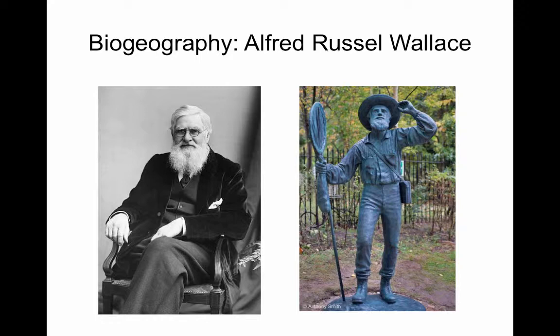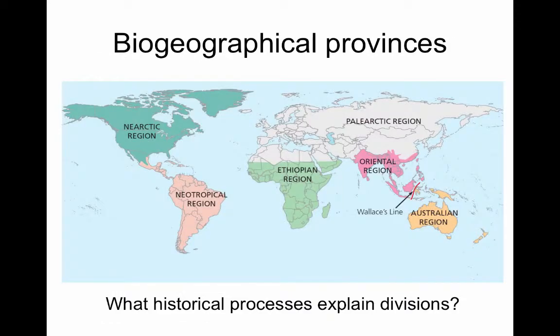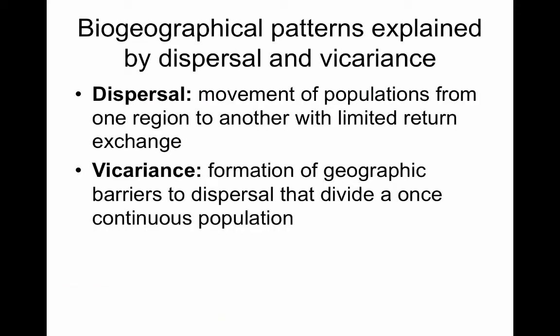He turned around and went to Indonesia and started the same collection there all over again. In his work he saw more different parts of the world than anyone else, and he noted that there were different groups of species in different parts of the world. We name a biogeographic dividing line, Wallace's line, that separates Southeast Asia from Australia and Papua New Guinea, where there's deep water and the birds, plants, and mammals all change between those two regions. Biogeographical patterns are explained by dispersal — the movement of populations from one region to another — and vicariance — the formation of geographic barriers to dispersal.